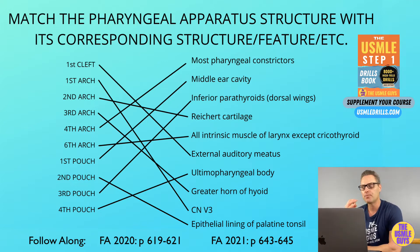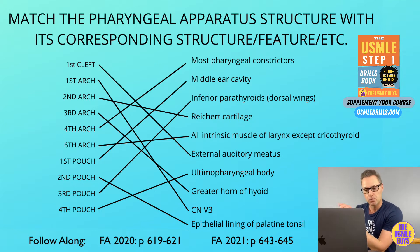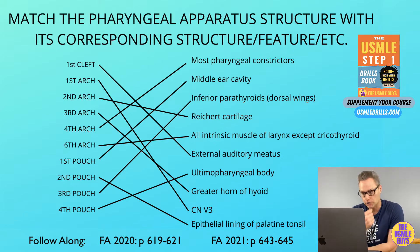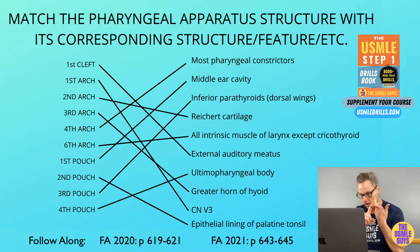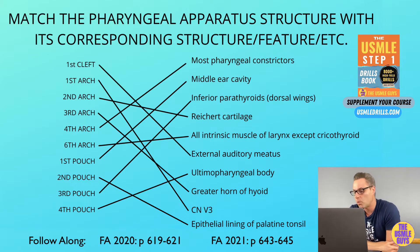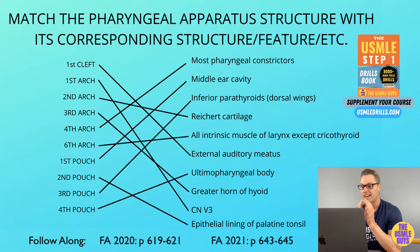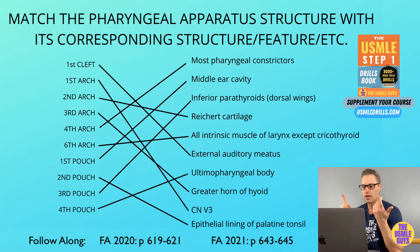The fourth arch is up next. The vascular derivatives differ between right and left: the right gives us the proximal portion of the subclavian artery, and the left gives us the aortic arch. The cartilaginous derivatives of the fourth arch include the laryngeal cartilages — specifically the corniculate, thyroid, and cuneiform cartilages. The associated nerve is the superior laryngeal branch of the vagus nerve, which innervates the muscular derivatives: the constrictors of the pharynx, the cricothyroid, and the levator palatini.